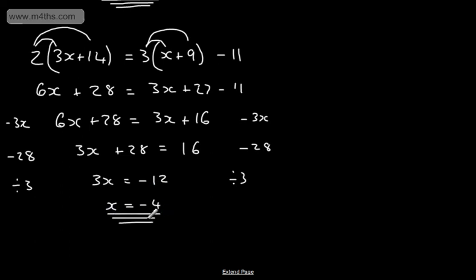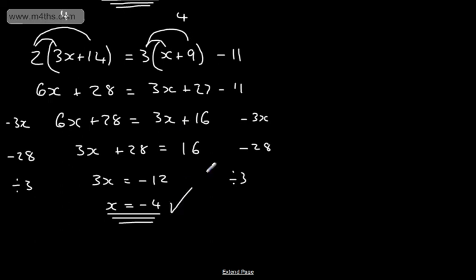Does this work? Substituting in: 3 times negative 4 is negative 12, plus 14 is 2, and 2 times 2 is 4. On the other side with negative 4: that gives 5, and 3 times 5 is 15, minus 11 is 4. So we can see it holds when x is equal to negative 4.